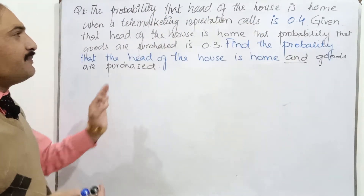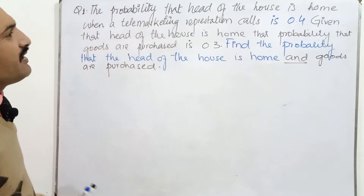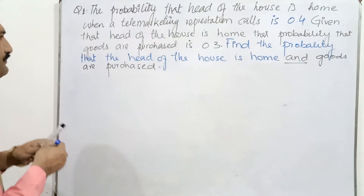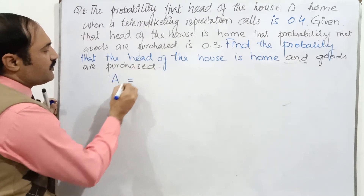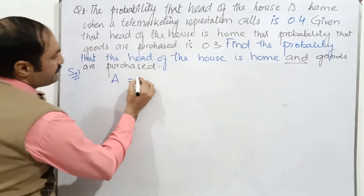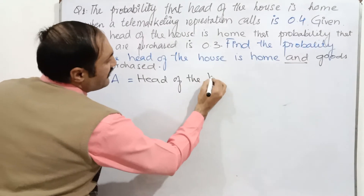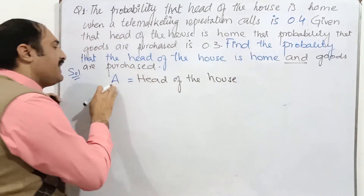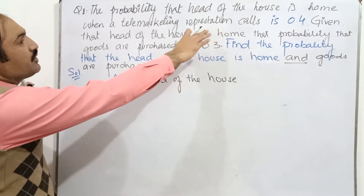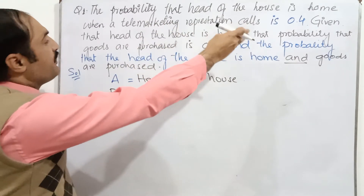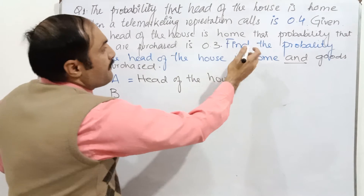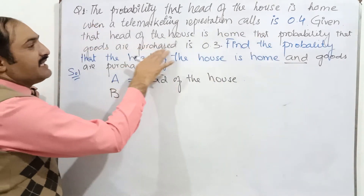Here is a little bit different question. The probability that the head of the house is home when a telemarketing representative calls is 0.4. The head of the house is denoted by A. The telemarketing calls probability is 0.5, and given that the head of the house is home, the probability goods are purchased is 0.3.